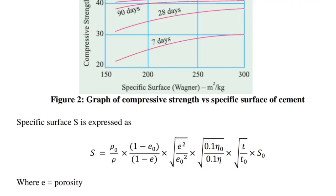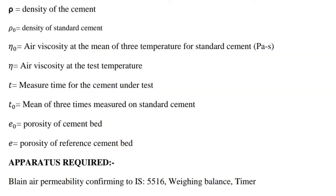Specific surface S is expressed by a formula where: E is equal to porosity; ρ (rho) is equal to density of the cement; ρ₀ (rho-not) is equal to density of the standard cement; η₀ (eta-not) is equal to air viscosity at the mean of three temperatures for standard cement; η (eta) is air viscosity at test temperature; T is time measured on test cement; T₀ is equal to mean of three times measured on standard cement; e (small) is equal to porosity of the cement bed; e₀ (small e-not) is equal to porosity of the reference cement bed.